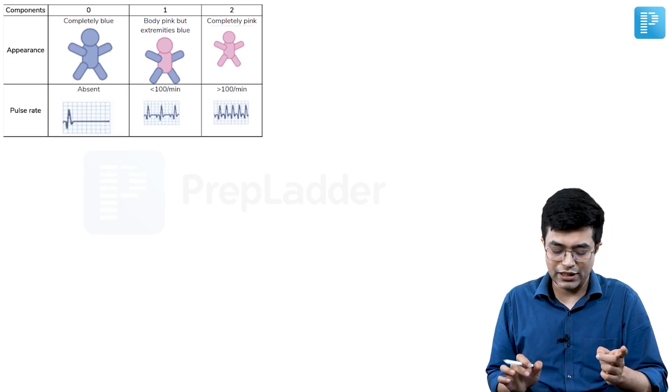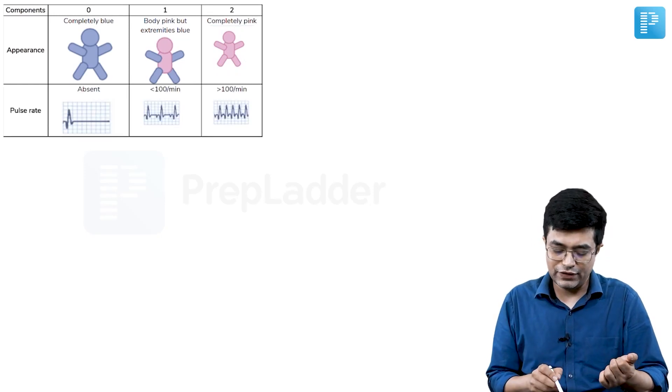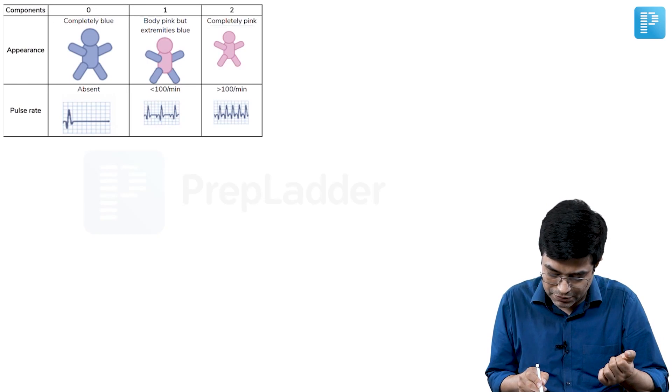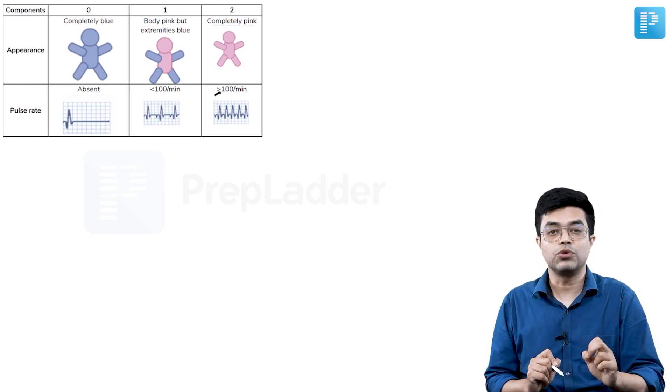The second P stands for pulse, that is heart rate. If the pulse is absent, score of 0. If it is less than 100 per minute, score of 1. If it is equal to or more than 100 per minute, that is given a score of 2.